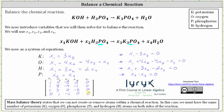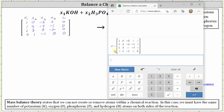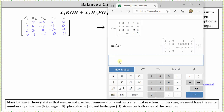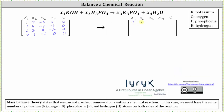The next step is to write the augmented matrix in reduced row echelon form. We will do this using the Desmos matrix calculator. We click RREF for reduced row echelon form, select matrix A, and use the convert to fraction button. Because we have the matrix in reduced row echelon form, the first non-zero entry in each row is a pivot. The pivots correspond to x sub one, x sub two, and x sub three, making them the basic variables, while x sub four is a free variable.